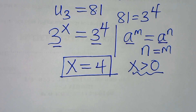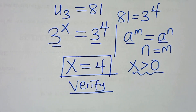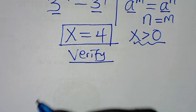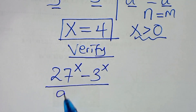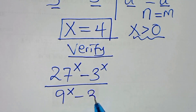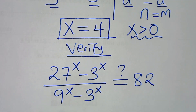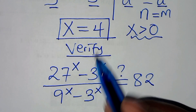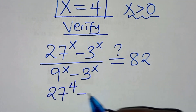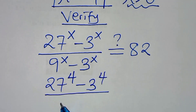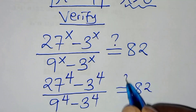Let's verify that x equals 4 satisfies the original equation. Substituting x equals 4: 27 to the power of 4, minus 3 to the power of 4, divided by 9 to the power of 4, minus 3 to the power of 4, should equal 82. We compute 27⁴ equals 531,441 and 3⁴ equals 81, giving 531,441 minus 81 in the numerator, and 9⁴ equals 6,561 minus 81 in the denominator.